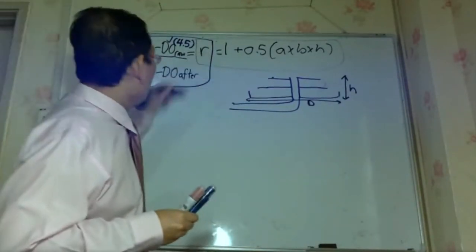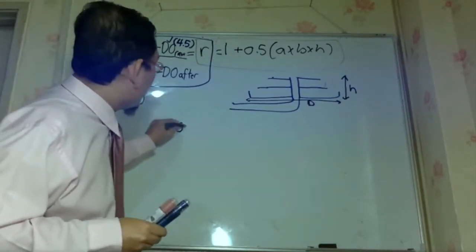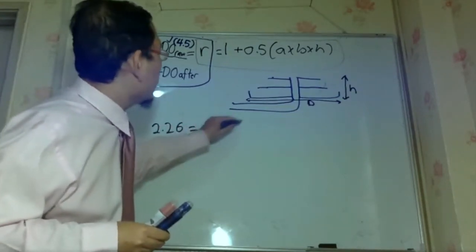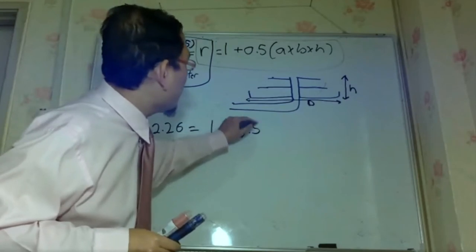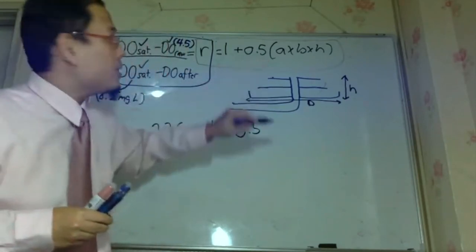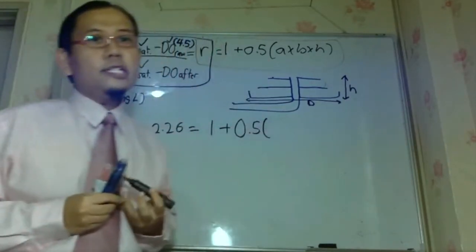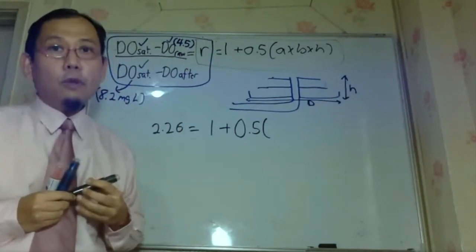Right, so remember R was 2.26, we have already calculated them, and 1 is 1, nothing wrong with 1, and then we have 0.5, still 0.5 from the Garmeson formula. And we have already said that we are going to use slightly polluted water,